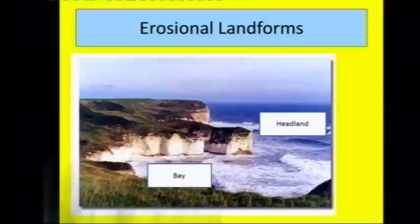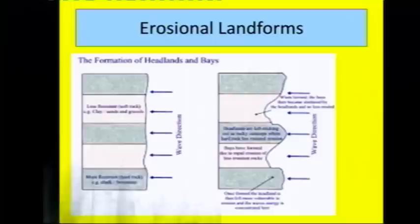There are different types of erosional landforms caused by these processes. You can see here we've got a headland, which is hard resistant rock like limestone or granite sticking out into the sea. That's because it takes a really long time for this to be worn away. However, in front of that headland we've got an area of softer rock which has been eroded much more easily, and that's called a bay.